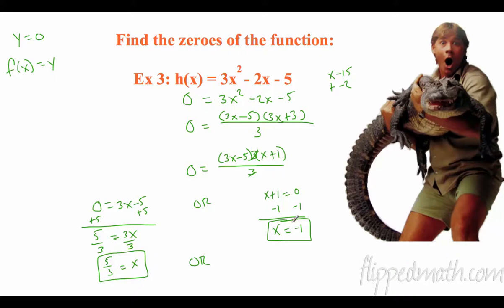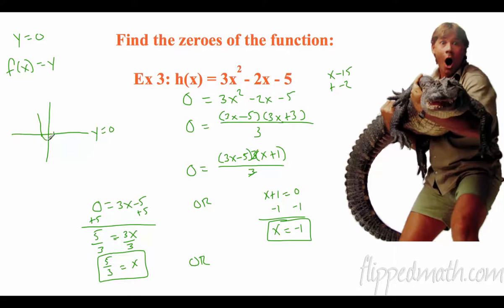Hopefully you're noticing when we solve these we have two answers. When we solved linear equations we had one answer; here we have two answers. Here's why: if you were to graph this, and y equals 0 when we find the zeros, the graph is going to cross at 5 thirds and at negative 1, and it's going to look like a parabola. We'll talk more about that in unit 12. But that's why it's called finding the zeros — that's where the graph crosses the x-axis, the y equals zero line.